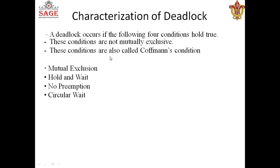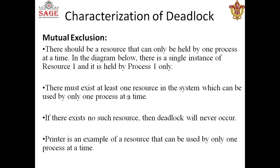These conditions are also called the Coffman conditions. The first condition is mutual exclusion. Mutual exclusion means there should be a resource that can only be held by one process at a time, and no other process can access or use that particular resource — meaning the resource is not shared between processes at the same time.